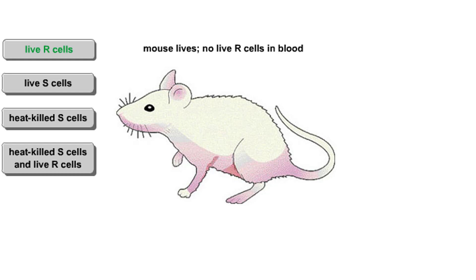Mice injected with R cells remained healthy. When Griffith examined blood samples from these mice, he found no live bacteria.